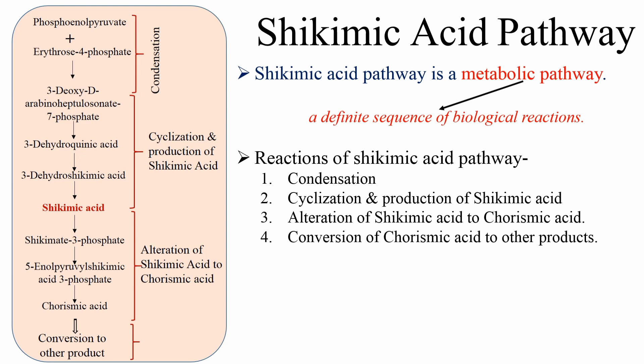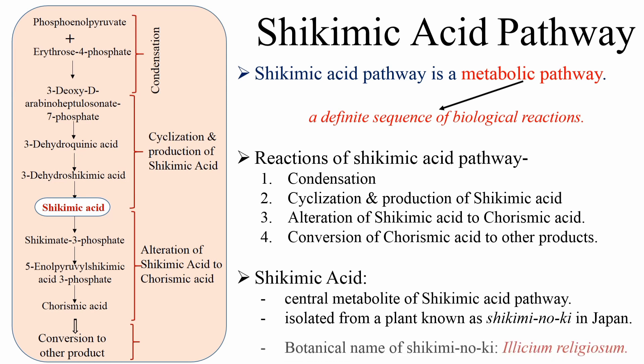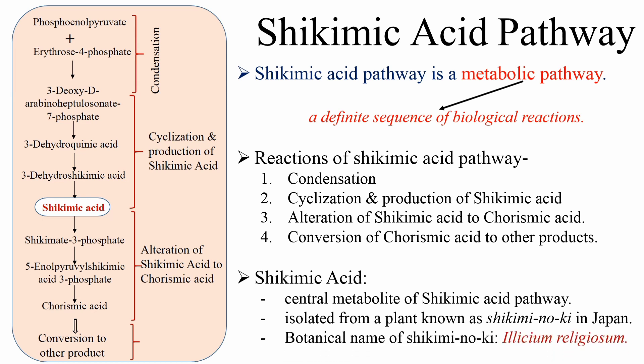Now coming to the name of the pathway. Shikimic Acid Pathway is called so because Shikimic Acid is the central metabolite in this pathway. The name Shikimic Acid itself has been derived from the plant from which this component was isolated. Shikimic Acid was isolated from a plant called Sikimi-noki in Japanese language. The botanical name of the plant is Illicium religiosum.